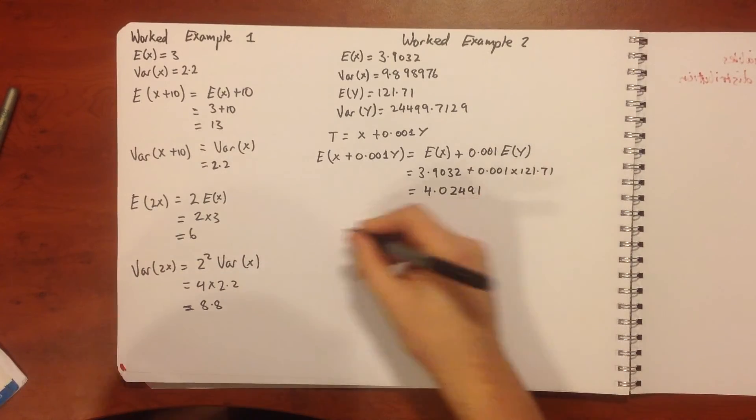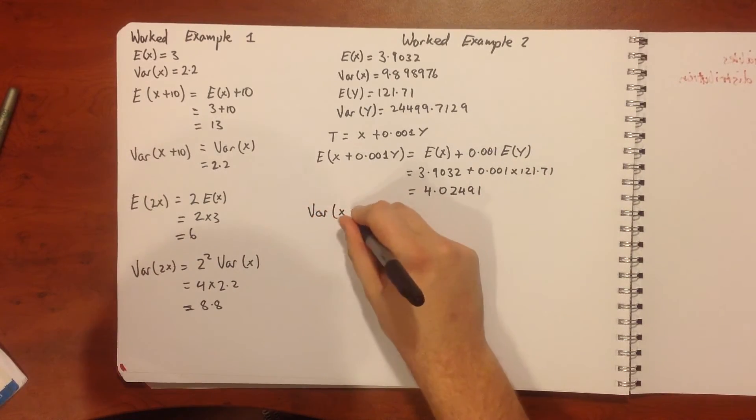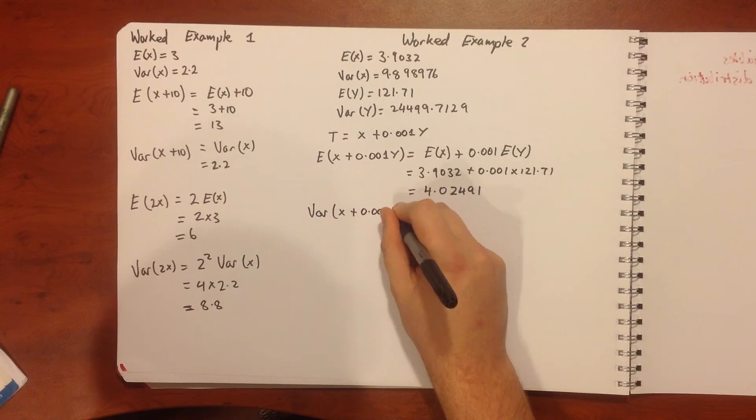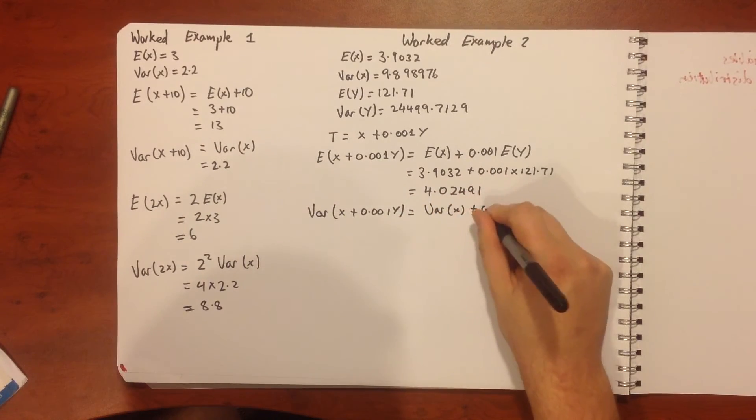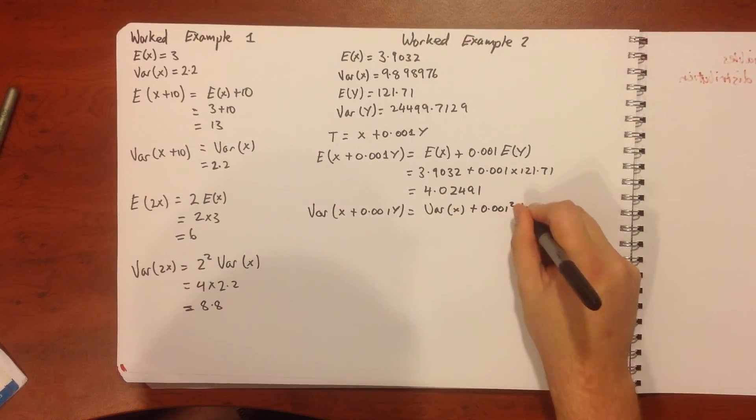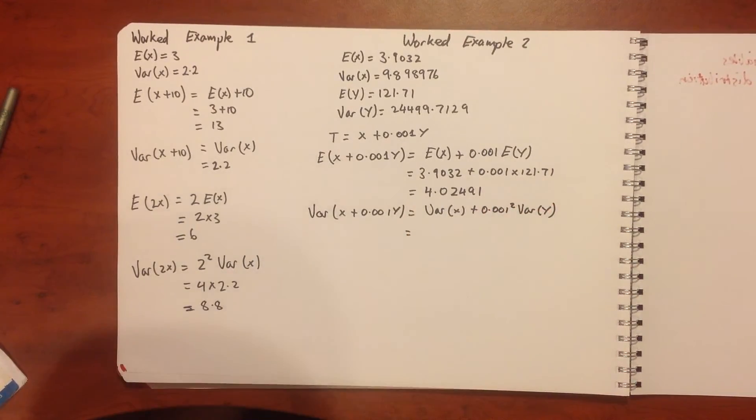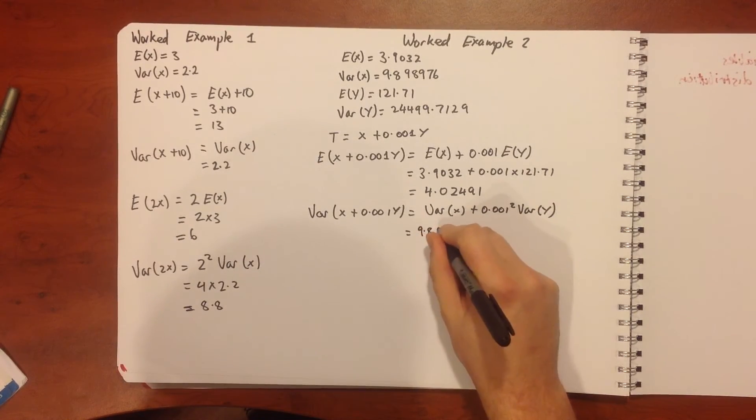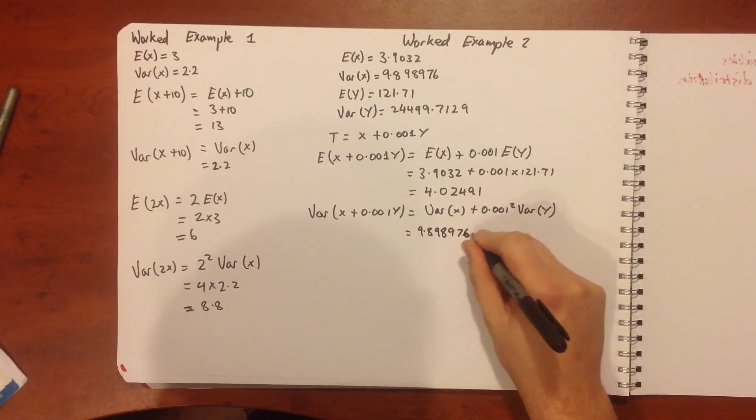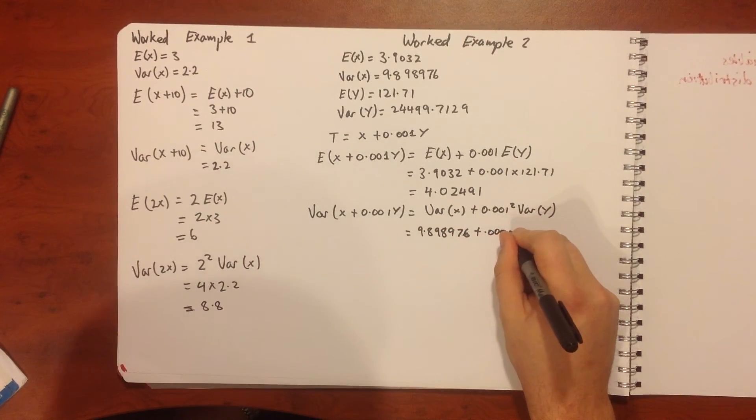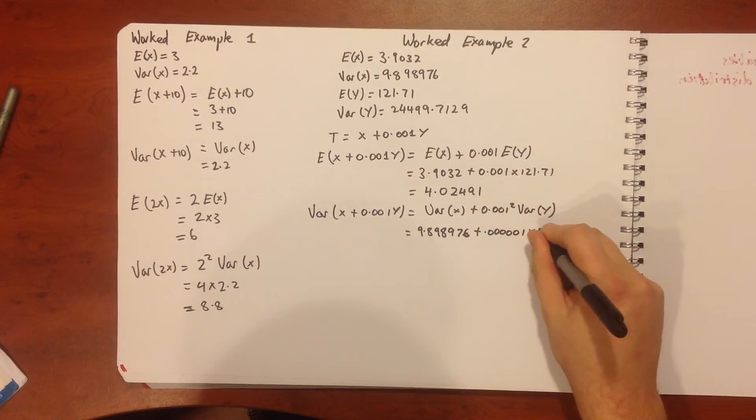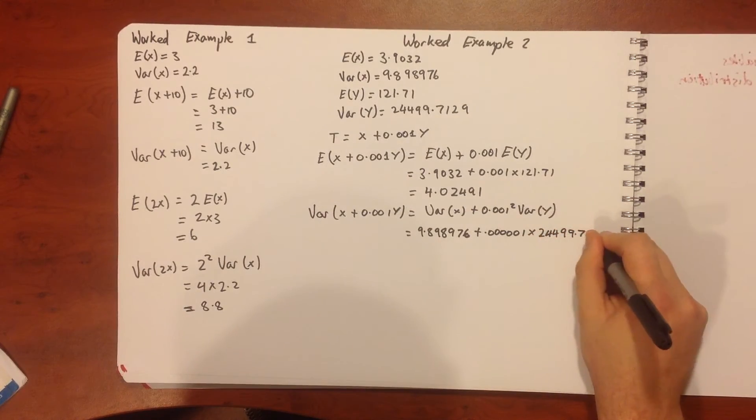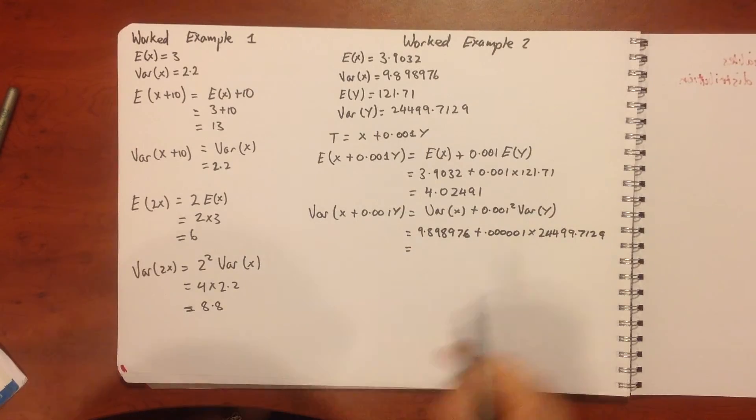When we look at our variance of x plus 0.001y, that's going to be equal to our variance of x plus 0.001 squared times our variance of y. That means we're going to get 9.898976 plus 0.001 squared times our variance of y, which is 24499.7129. When we multiply that through and add on we get a value of 9.923476.